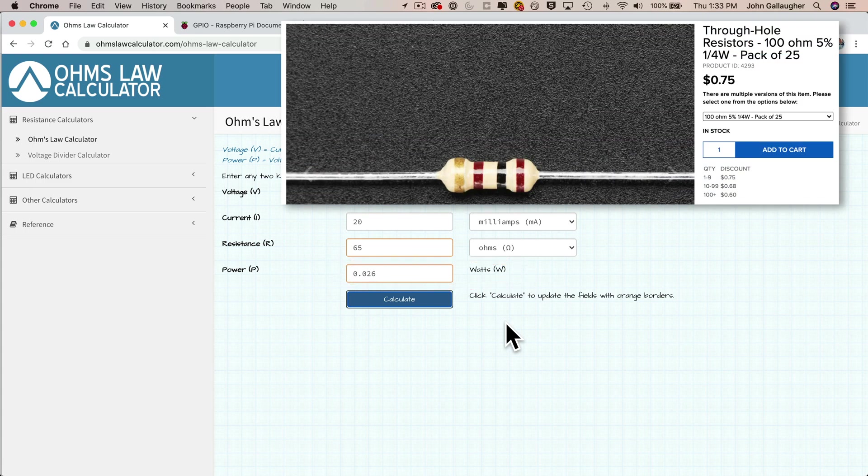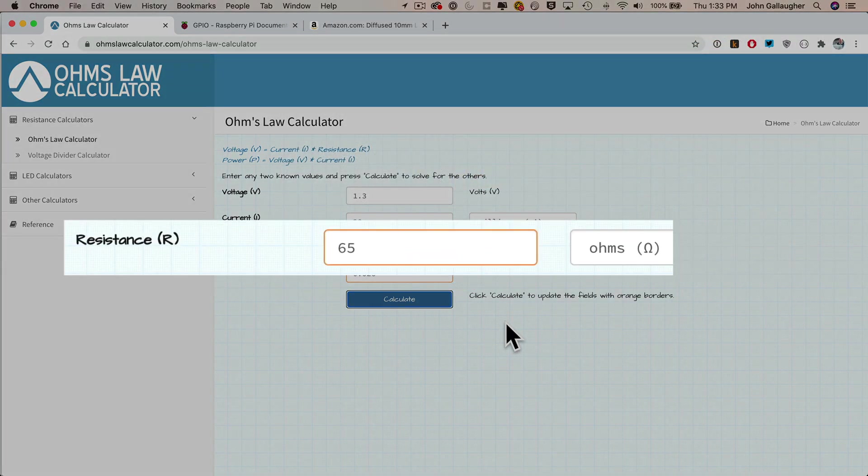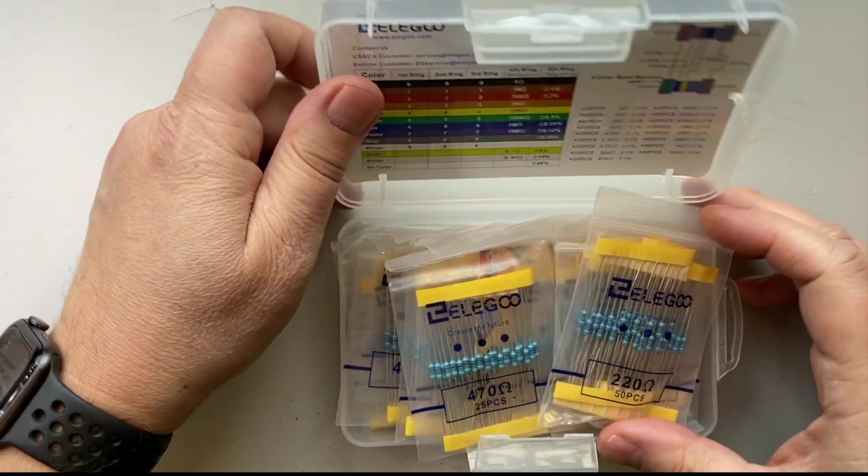And if we look at the resistors that we're using, these are quarter watt resistors, which is pretty standard. A quarter watt resistor is 0.25 watts, which is much larger than 0.026. So we figured out we need a 65 ohm resistor, but a little snag, 65 ohms isn't a standard resistor size.